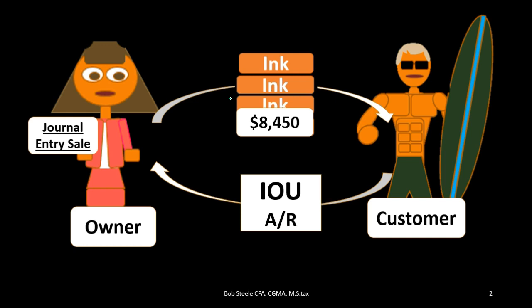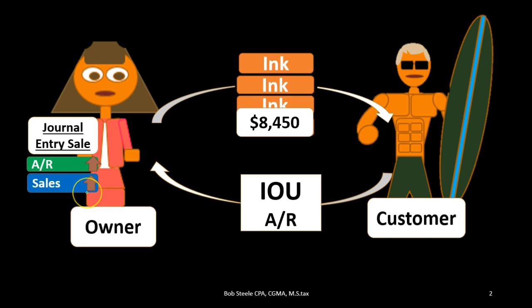If we removed inventory and the inventory accounts, and considered just a service sale, then accounts receivable would go up by $8,450 and we would have sales or revenue going up. A service company might call it fees earned or just revenue or income. In a merchandising company, we often call it sales, but it's just a revenue account and it goes up.